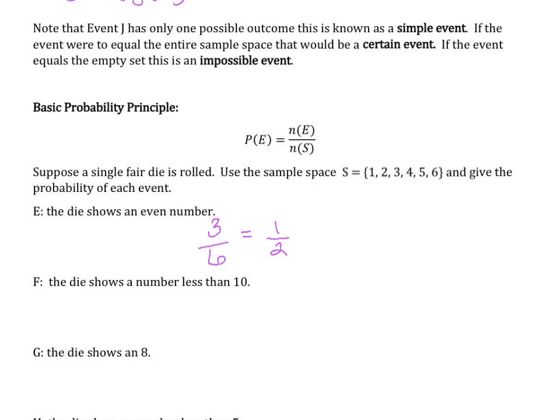What is the probability that we would get a number that is less than 10? Well, again, we have six total outcomes. How many of those are less than 10? It looks like all of them are less than 10. So this would be called a certain event since our entire sample space is shown.